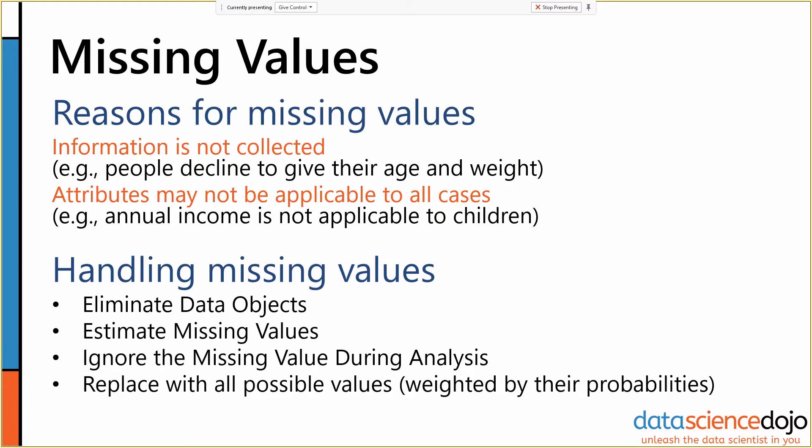Another one that shows up very frequently is missing values. Sometimes missing values occur because information is not collected. When you're looking at census information or survey information in particular, people will often decline to give their age and weight or decline to give their annual income, so you just have missing values.